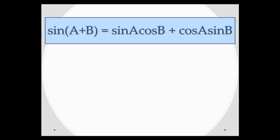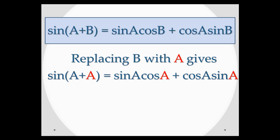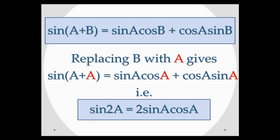If we take the formula for sine(a + b) as our starting point and replace b with a, we end up with a formula for sine(a + a) — in other words, a formula for sine 2a. We find that sine 2a is equal to 2 sine a cos a. You have one thing plus the same thing, so sine 2a is 2 sine a cos a.